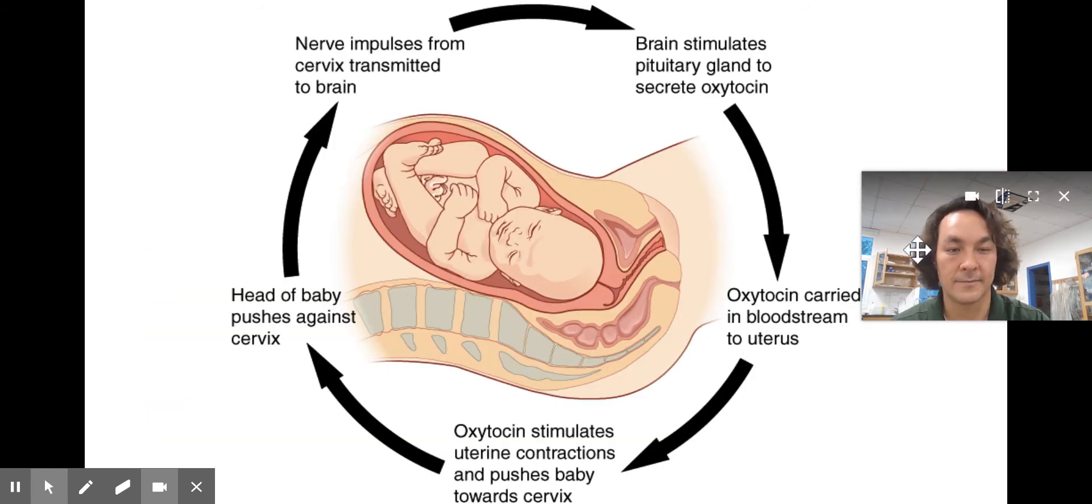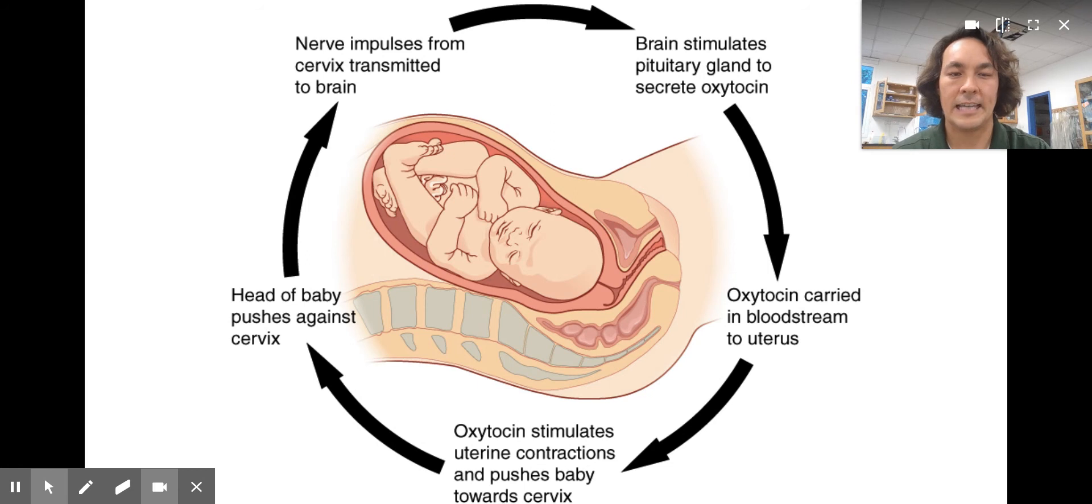Here's an example of a positive feedback loop. A positive feedback loop is trying to amplify or transform the system. It is changing. Here the baby starts to push against the cervix. The nerve impulses from the cervix are transmitted to the brain. The brain is going to release oxytocin. Oxytocin is going to go to the uterus, which is going to stimulate contractions to push the baby's head more towards the cervix, which will then cause the brain to send the signal to make more oxytocin to cause greater contractions. This will go until the baby is out. That's the safest way to deliver a baby. So this is positive feedback, trying to amplify, transform, or change the system. Some other examples might be fruit ripening as well.